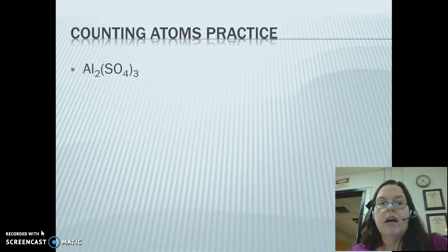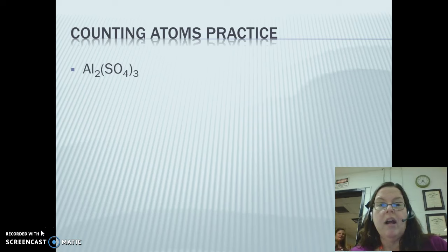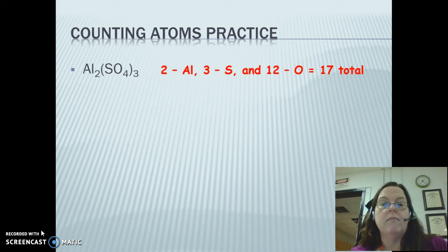How do we practice? If we've got Al₂(SO₄)₃, then we have how many atoms? We have two aluminums, three sulfurs, and 12 oxygens for a total of 17 atoms.